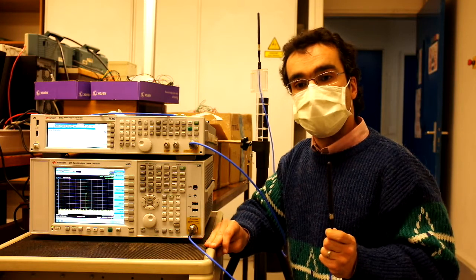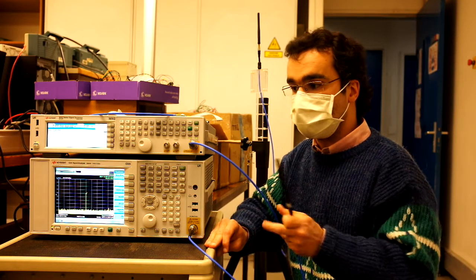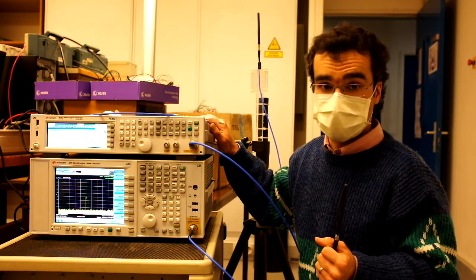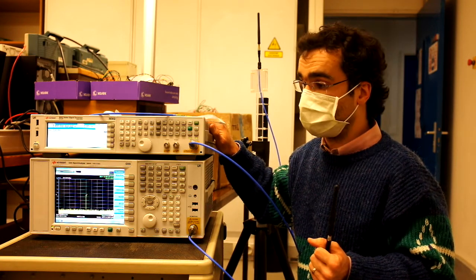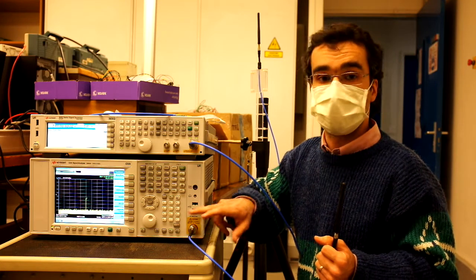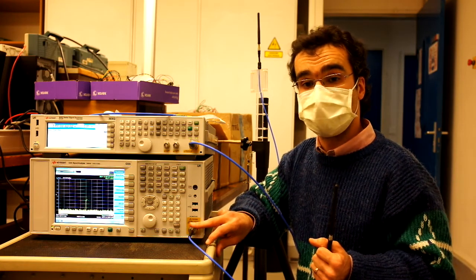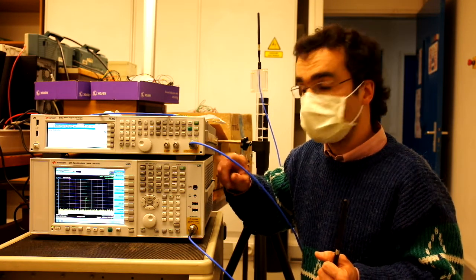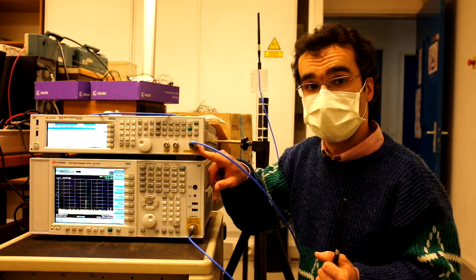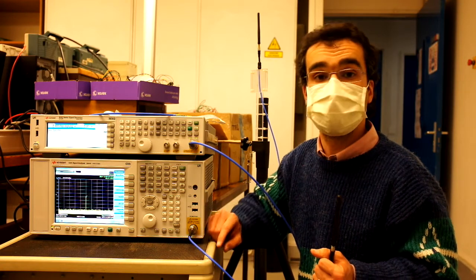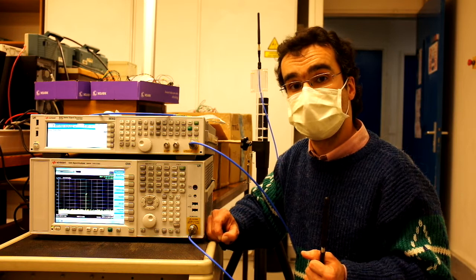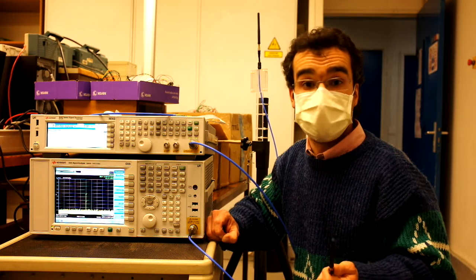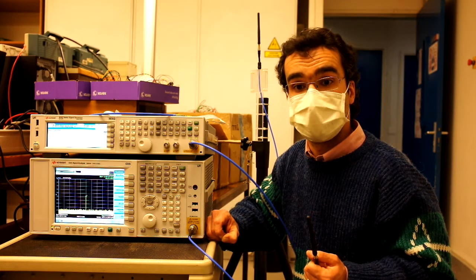We can easily measure the losses in the cable by two methods. The first one is using a calibrated generator like this one and you measure the received power on the spectrum analyzer. So I have previously done the measurement. With an injected power of 0 dBm I get at the output of the coaxial cable minus 0.9 dBm, meaning that the attenuation is around 0.9 dB.